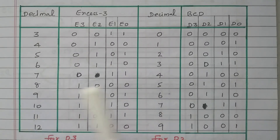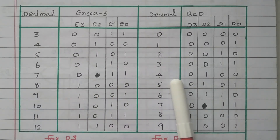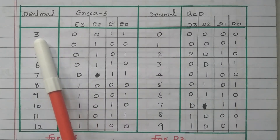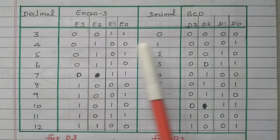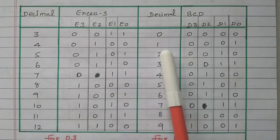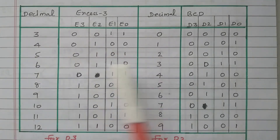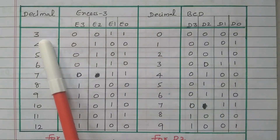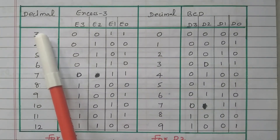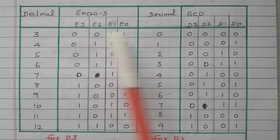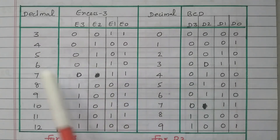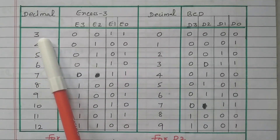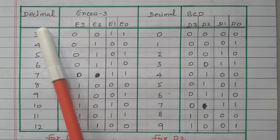Now what we need is XS3 to BCD, so we subtract here. 3 minus 3 is 0, 4 minus 3 is 1, 5 minus 3 is 2. The minimum XS3 value we start with is 3 — we cannot start with 2 or 1, because subtracting would give a negative value. So 2, 1, and 0 give negative values.